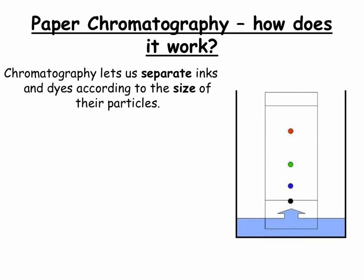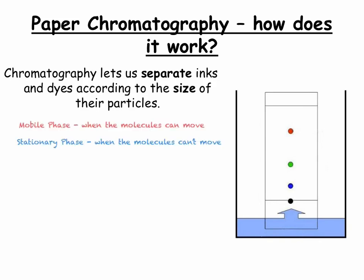Chromatography lets us separate inks and dyes according to the size of the particle. In chromatography we have two phases: the mobile phase, which is when the molecules can move, and the stationary phase, when the molecules can't move. During chromatography, the substances in the sample move between the mobile and the stationary phase, and an equilibrium is formed between these two phases. The mobile phase moves through the stationary phase, and anything that dissolves in the mobile phase will move up with it.